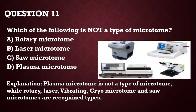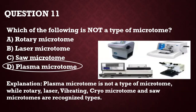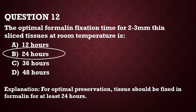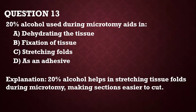Those are microtomes. Each of the following is a type of microtome except plasma microtome — I've never heard of a plasma microtome, so it's not really a type. We have rotary, laser, vibrating, sliding, cryo, saw, and ultramicrotome — many types. Question number 12: the optimal formalin fixation time for 2 to 3 millimeter thin sliced tissues at room temperature is 24 hours; they must be preserved for at least 24 hours.